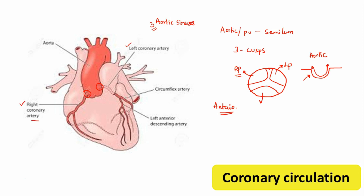The right coronary artery takes origin from the anterior aortic sinus. After taking origin from the anterior aortic sinus, it runs in between the right atrium and the pulmonary trunk. At the junction of the right border and the inferior border of the heart, it takes a turn to the posterior aspect.